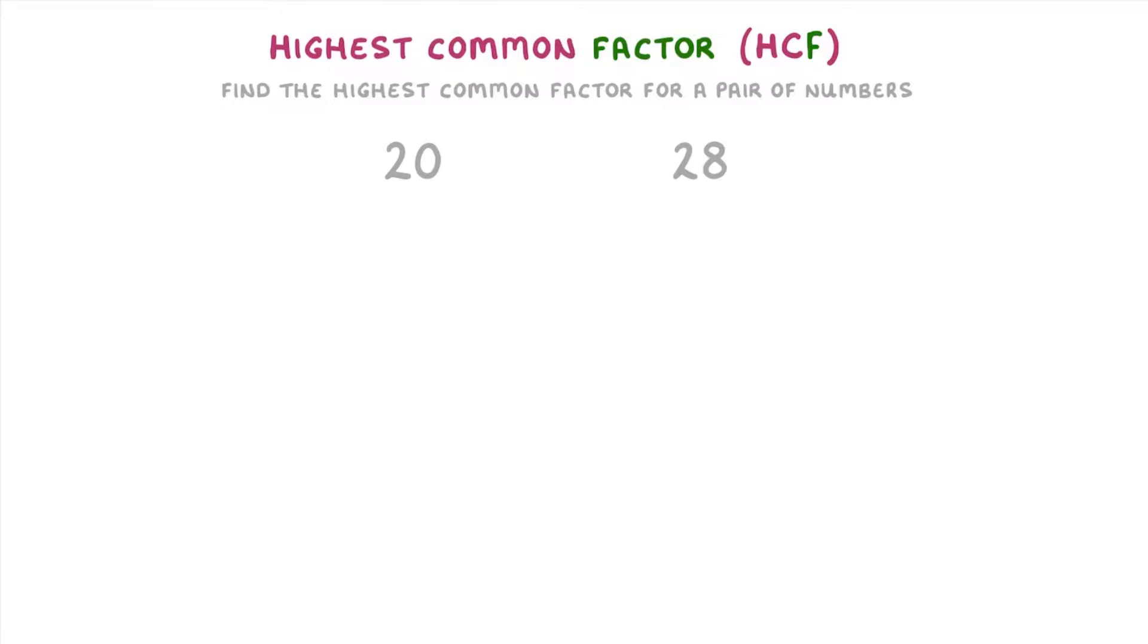like 20 and 28. 20 has the factors 1, 2, 4, 5, 10, and 20, while 28 has the factors 1, 2, 4, 7, 14, and 28.